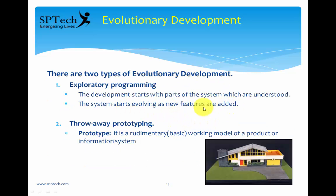There are two types of evolutionary development. The first is called exploratory programming. The development starts with the parts of the system that are understood, and the system starts evolving as new features are added. You initially start with a few requirements and keep evolving the software as new requirements are added — that is called exploratory programming.